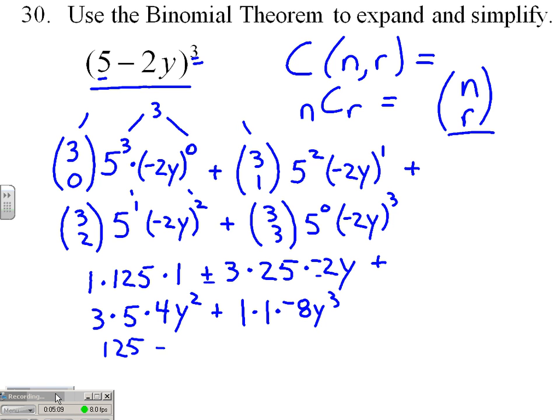Giving us a final simplified result of 125. Here I have a plus times a minus, so minus. 3 times 25 times 2 is 150y.